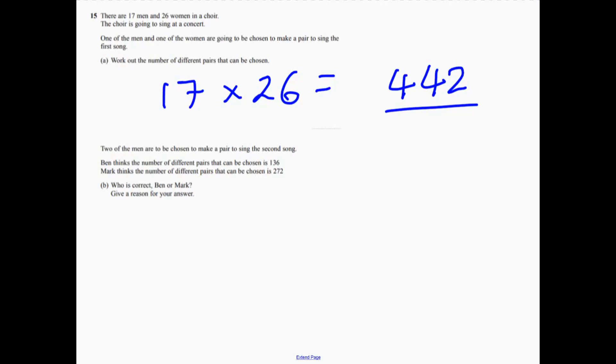Well, what you need to do here. So the number of ways of picking the first man is 17. And then we've got times 16. Now, the mistake that Mark's made is he's not divided it by 2. Ben is correct.